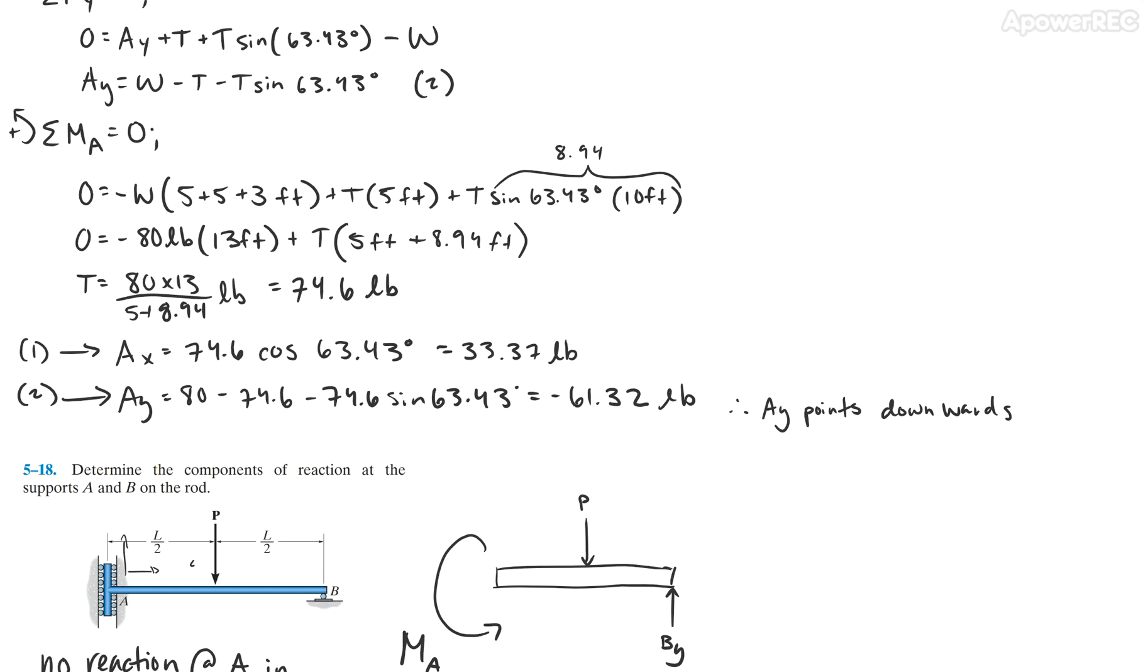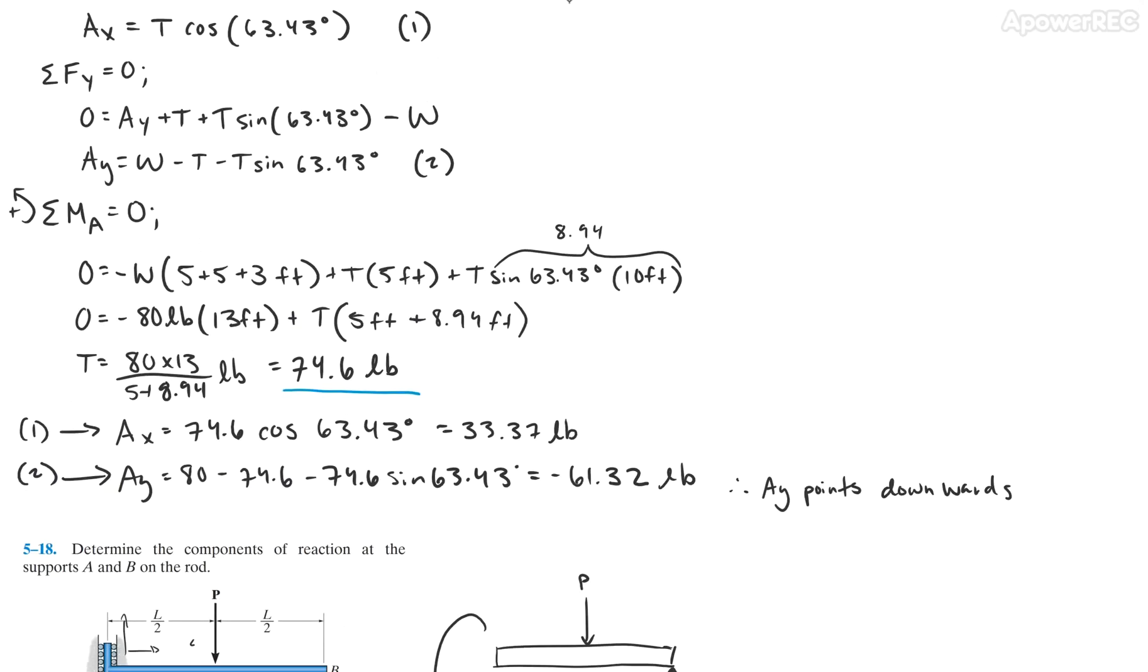This gives us tension equal to 74.6 pounds. The last step is to take our initial equations and plug in tension so that we can get 33.37 pounds for AX and negative 61.32 pounds for AY.